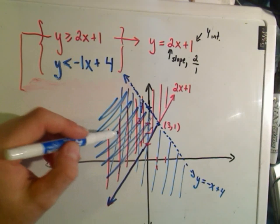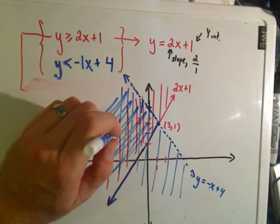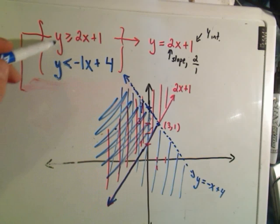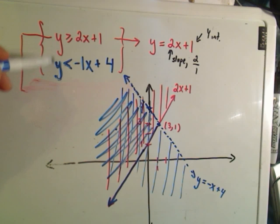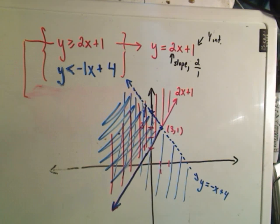If you take any x and y dot, any coordinate in this region, it says if you plug it into both inequalities, that point will satisfy both inequalities.